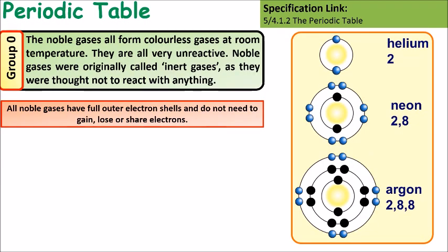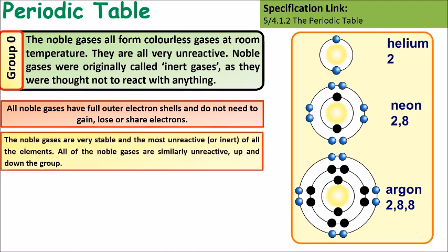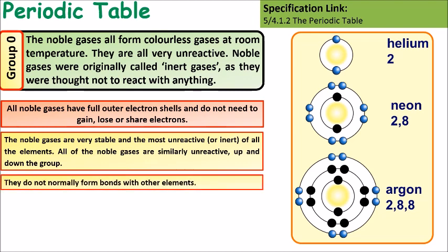Group 0 atoms are known as noble gases. All noble gases have a full outer shell of electrons, so they do not need to lose or gain electrons. This means that they're very unreactive because they're very stable. They do not normally form bonds with other elements.